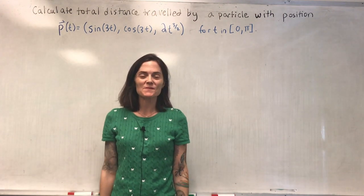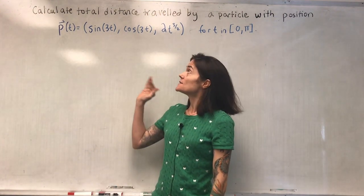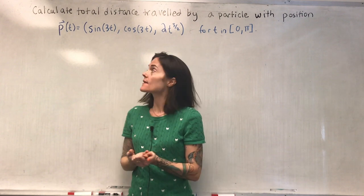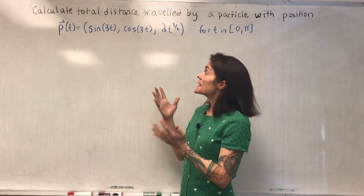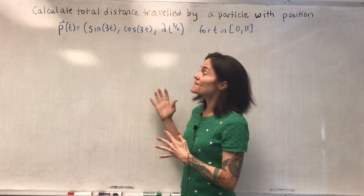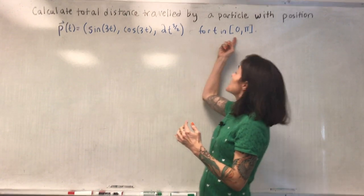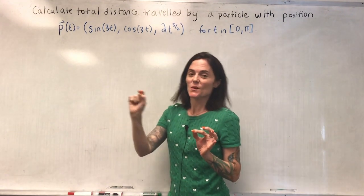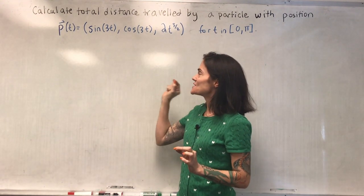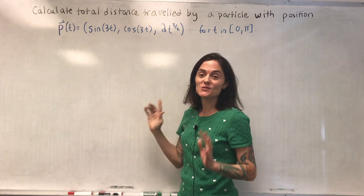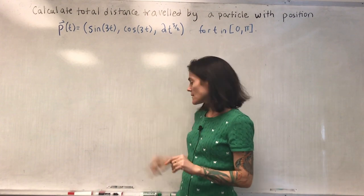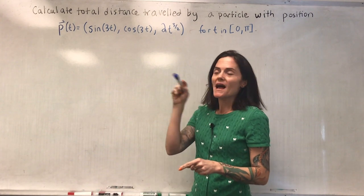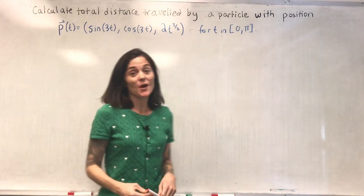I'd like to do two examples where we calculate the total distance traveled, or another way to say that is the arc length. In this case, we will do one that's given in vector form. So for t in zero to pi, this function p of t gives us the location of our particle at each time. It has three components. We are in R3. And then the next example, I will have a function y is f of x, and we compute arc length.